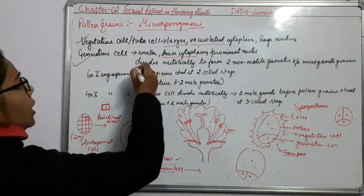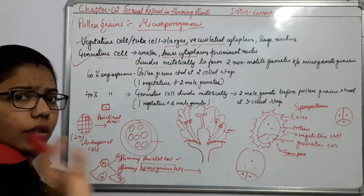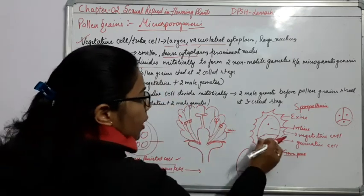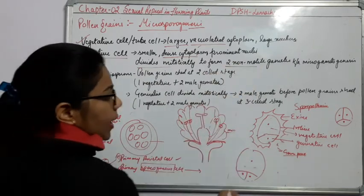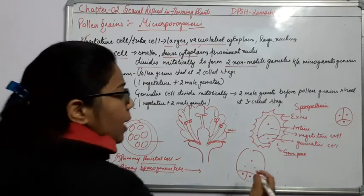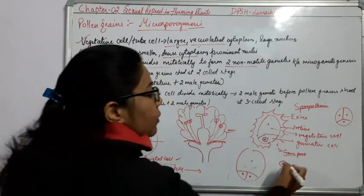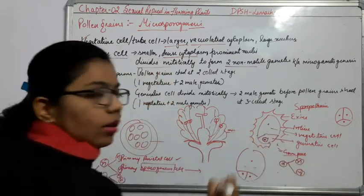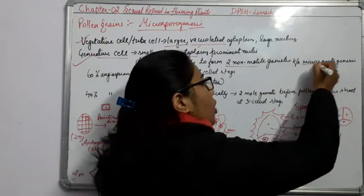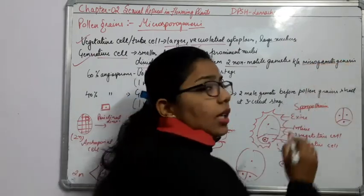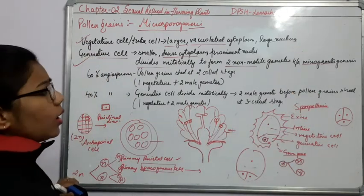The generative cell divides mitotically to form two non-motile gametes. This is the generative cell — the smaller part — and it will again divide mitotically to form two non-motile gametes. From this haploid N it will form two more haploid cells. This process is known as microgametogenesis — micro relates to microspores and gameto means gamete formation.